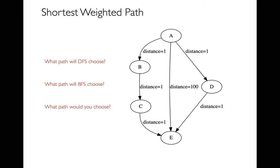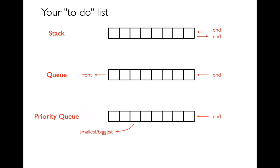Strangely, A→E has the fewest hops but the worst cost of 100. The DFS path has a cost of only 3. As a human, you'd want to take A→D→E with a cost of 2. So we need some way of thinking about edge costs. The way we achieve different search patterns is by making decisions about how we use our to-do list.